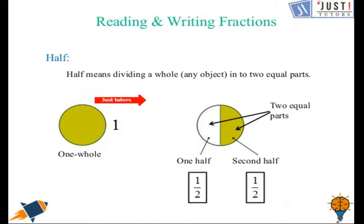Our next topic is half. Here we have 1 whole and if we divide this 1 whole by a line into 2 equal parts, that will be 1 half and that will be 2nd half. We write 1 half as 1 over 2. We can say that in total now we have 2 parts so 2 will be denominator. And we are talking about this part only, so 1 as numerator. Same will go for the 2nd half.